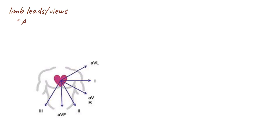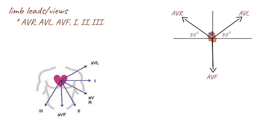There are 6 limb leads: aVR, aVL, aVF, and leads 1, 2 and 3. The limb leads aVR, aVL and aVF are also unipolar leads, as they only have one associated electrode. For these leads, the negative pole is also at the center of the heart, and the three leads create a triangle known as Einthoven's triangle.